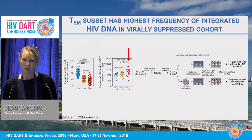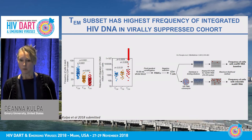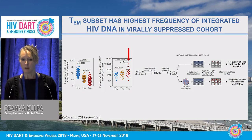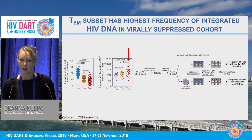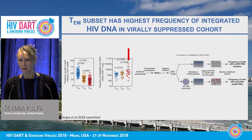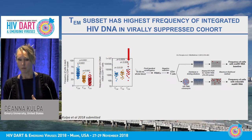From these ex vivo samples, we looked at the frequency of central memory, transitional memory, and effector memory populations. Similar to what has been reported by Nicolas Chamont and other groups, the central memory population subset comprises the majority of cells in the memory compartment. But when we look at the frequency of cells carrying integrated HIV DNA using a PCR-based approach, the effector memory population has the highest frequency of proviral DNA. As Bob Silicano noted, this approach cannot distinguish between defective versus intact provirus.